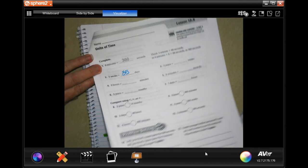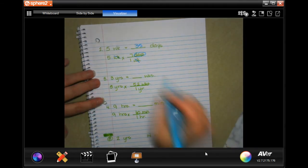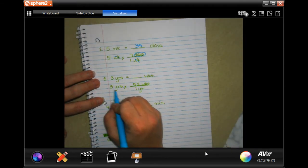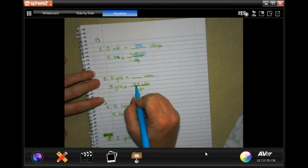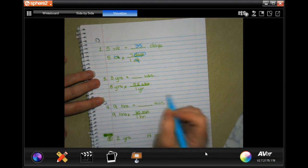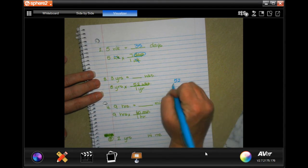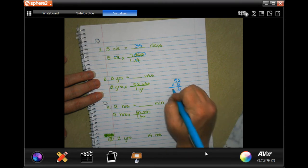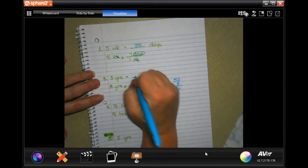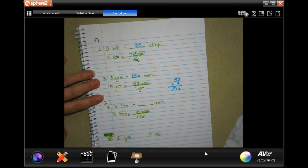Let's do another one. Three years is how many weeks? Well, three years, and in one year there's 52 weeks. So 52 times 3, three times two is 6, three times five is 15, so it's 156 weeks.